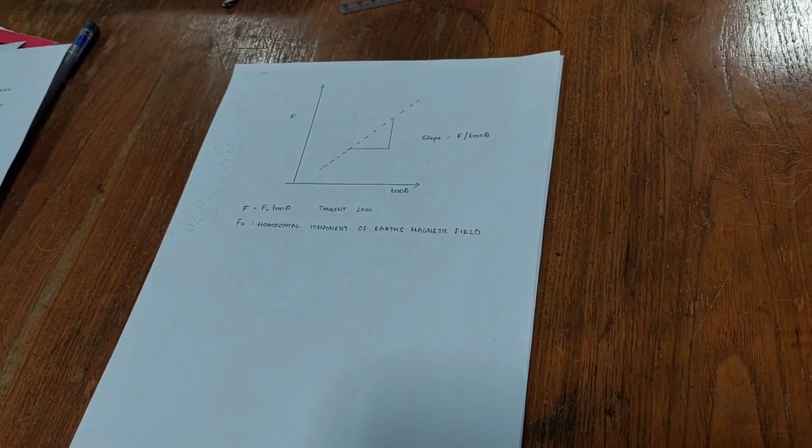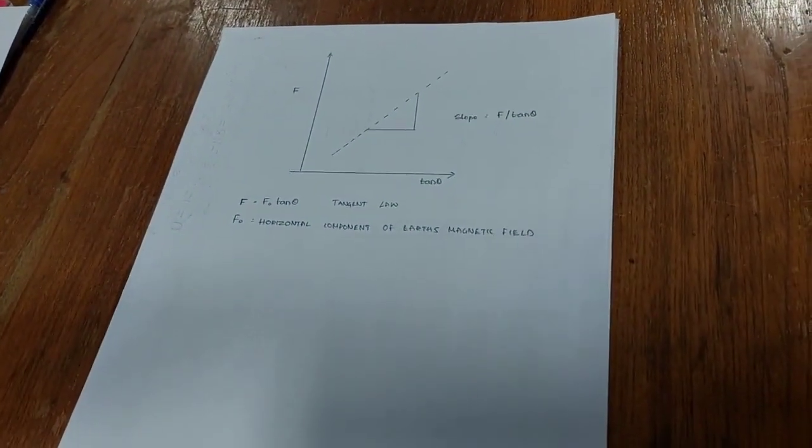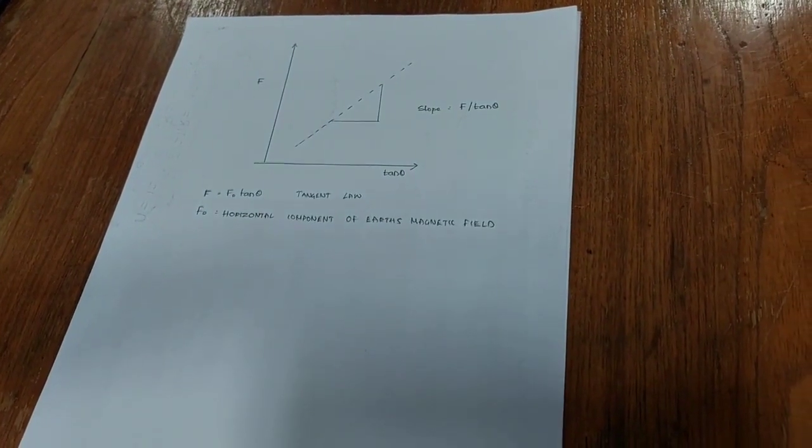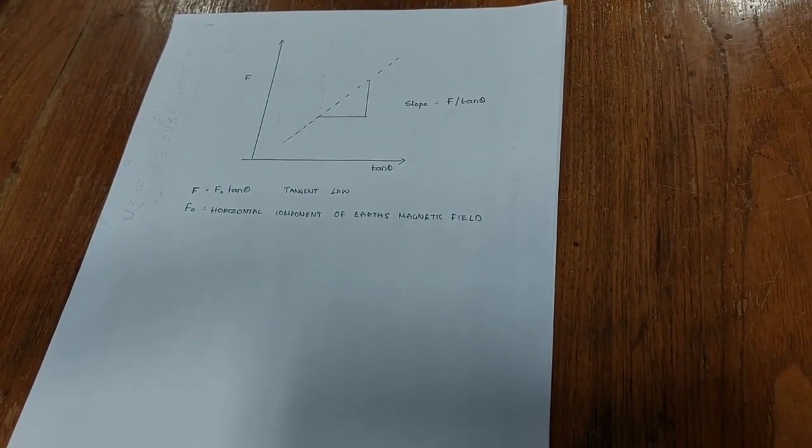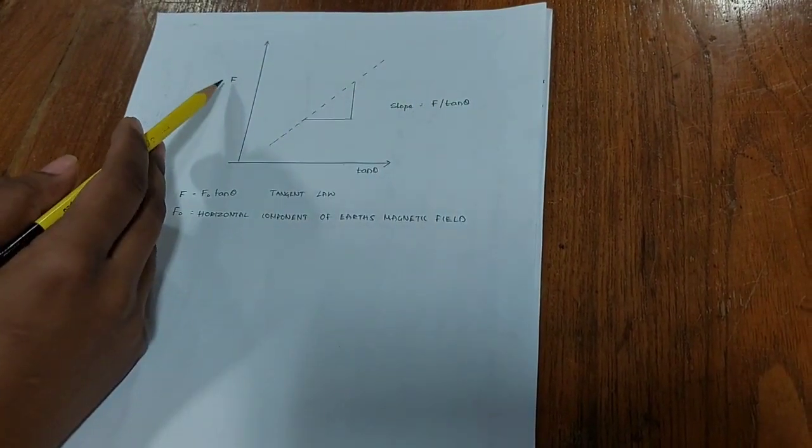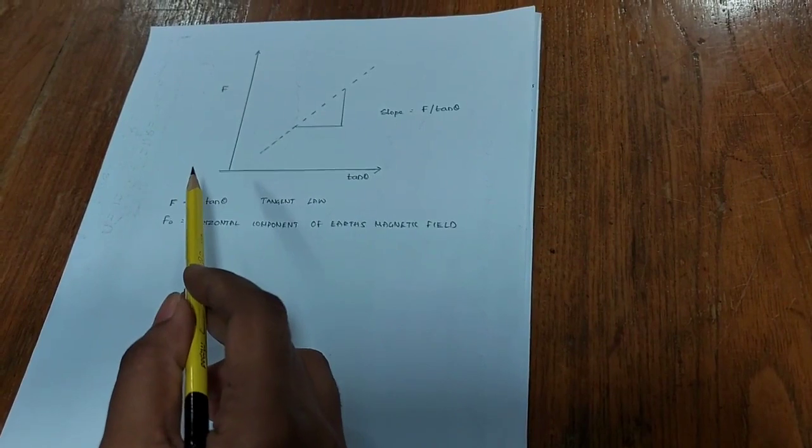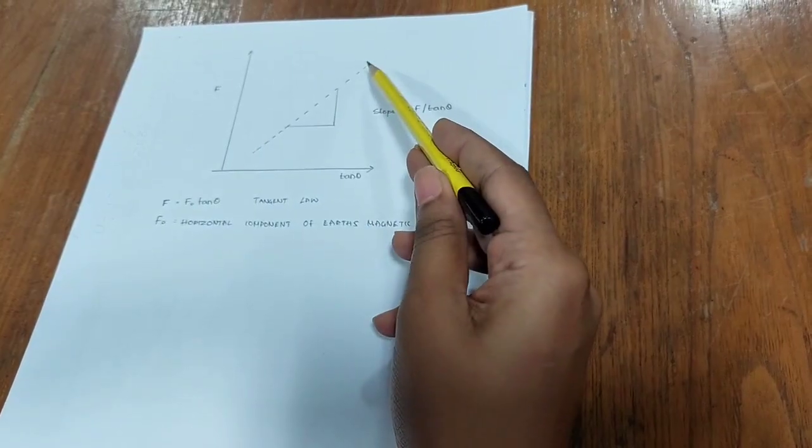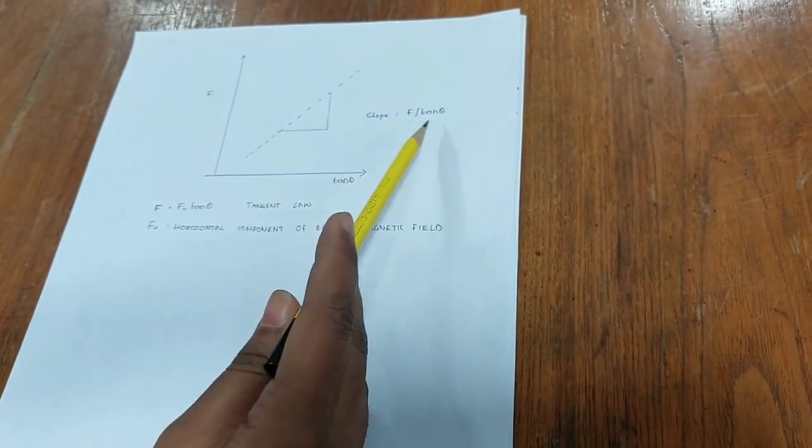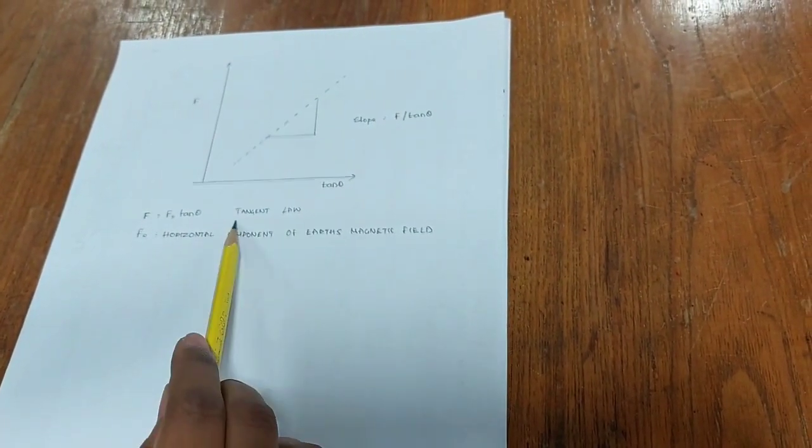Once we have completed the first part, that is finding the magnetic field along the axis of the coil, we shall proceed to the second part, that is determining the horizontal component of Earth's magnetic field. So we have the magnetic field and tan theta values and we shall plot them accordingly such that we have a linear distribution whose slope will directly yield the horizontal component of Earth's magnetic field according to the tangent law.